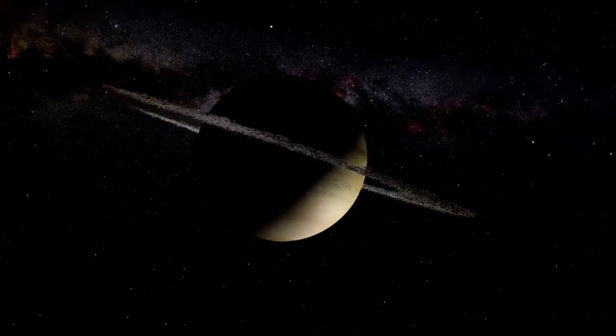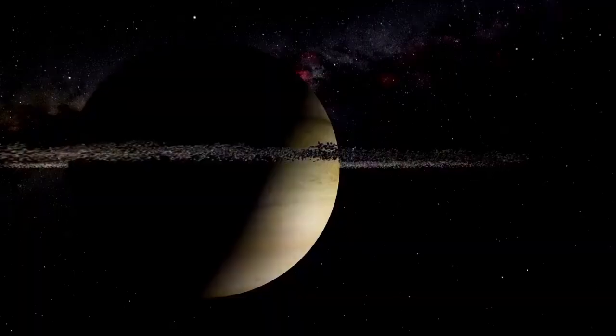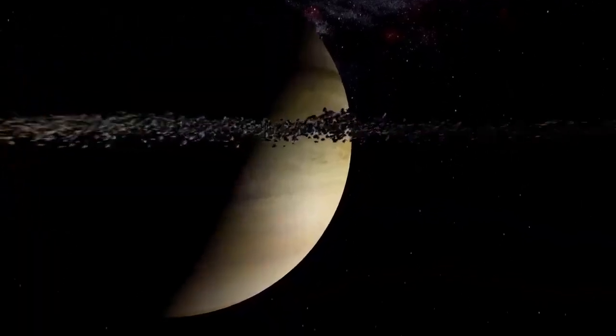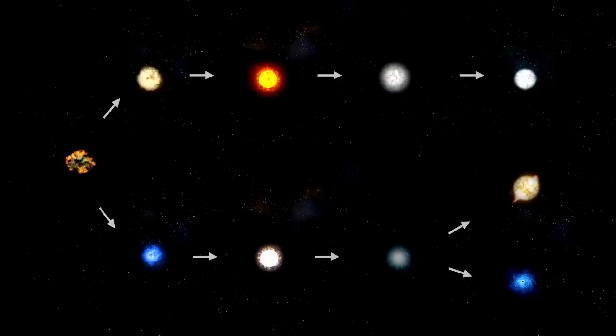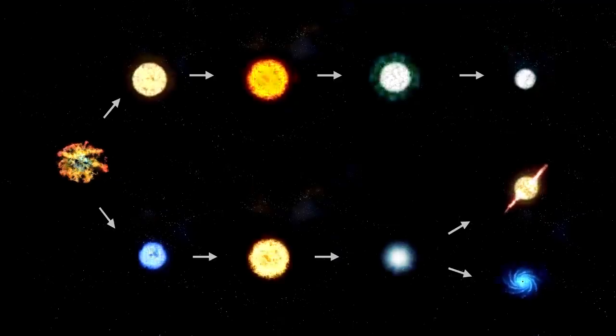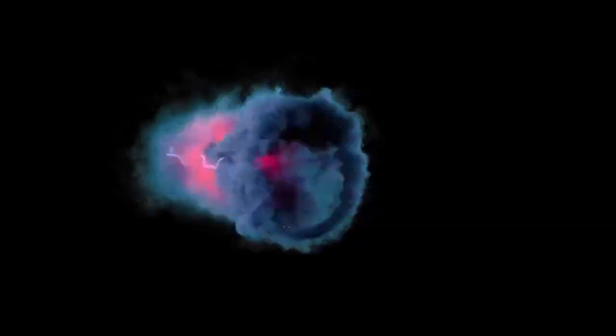Betelgeuse, a red supergiant in the constellation Orion, has intrigued cosmologists and sky observers alike for centuries due to its massive size and luminosity. This giant star, located approximately 642 light-years from planet Earth, is one of the brightest objects in the observable universe that can be observed with the naked eye.